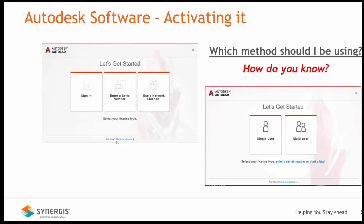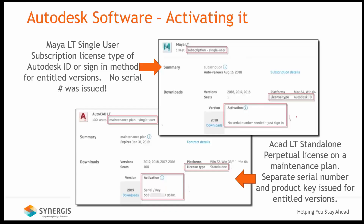Since there are three methods of activating your product, how do you know which method you should be using? Your activation method can be seen through your Autodesk account, or you can verify this activation process through those who manage your products for your organization.